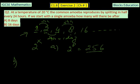And for the B part, it is 16 days, so it will be 2 raised to power 16, that is 65,536 amoeba after 16 days.